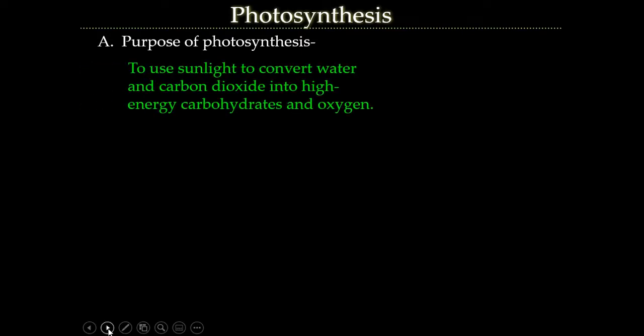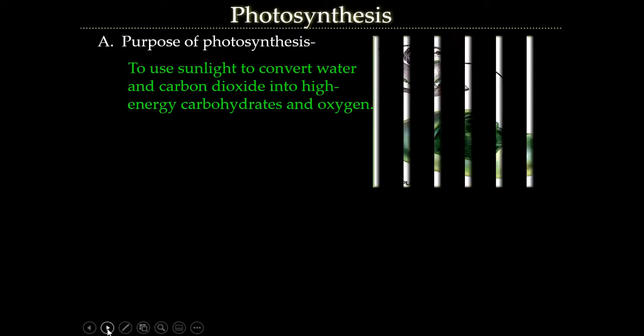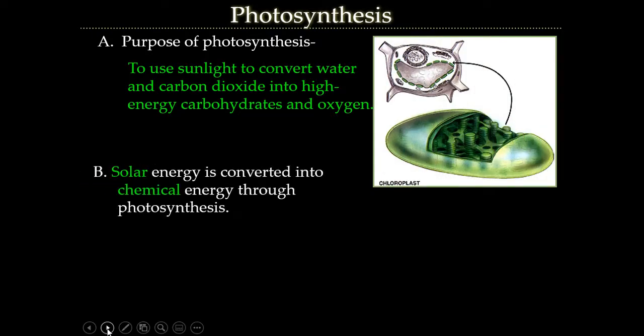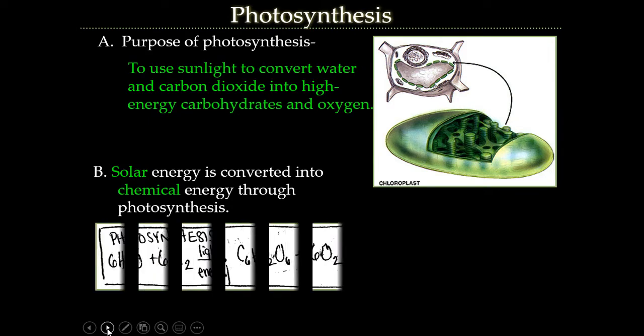What is the purpose of photosynthesis? The purpose is to use sunlight to convert water and carbon dioxide into high-energy carbohydrates and oxygen, and to convert solar energy into chemical energy through photosynthesis.